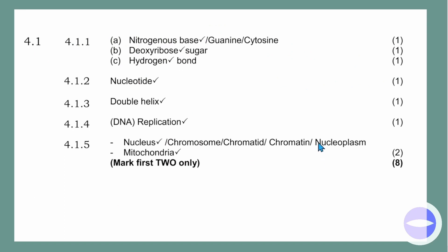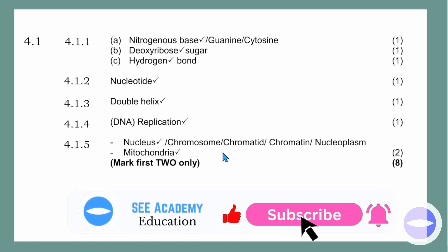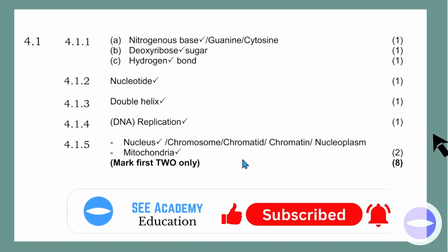Here is the memorandum showing how they mark: one mark each for nitrogenous base, deoxyribose, hydrogen bond, nucleotide, double helix, DNA replication, and nucleus. If you don't want to write nucleus you can say chromosome, chromatids, or chromatin in nucleoplasm. The other mark is for mitochondria. I hope everything is clear — please give the video a thumbs up, subscribe to our channel, and good luck with your studies. Thank you very much, God bless you.